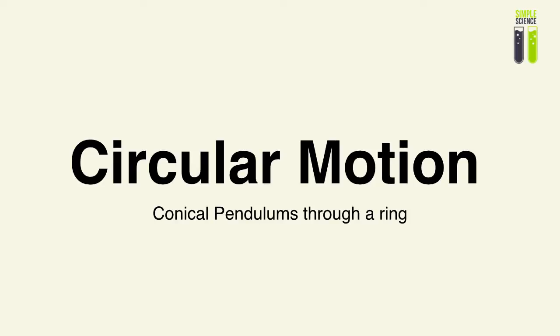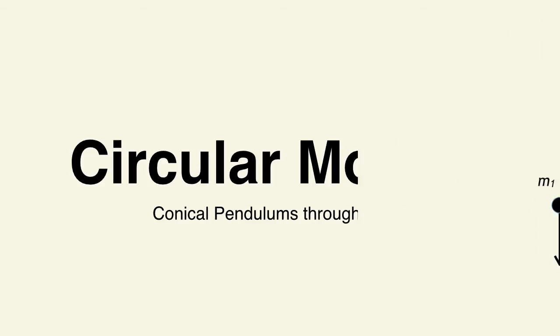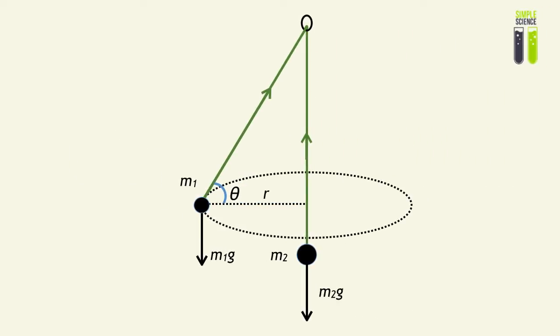Another form of circular motion that is horizontal is the conical pendulum that takes place through a ring. The situation I'm describing here is basically a single string through a ring that attaches two masses.